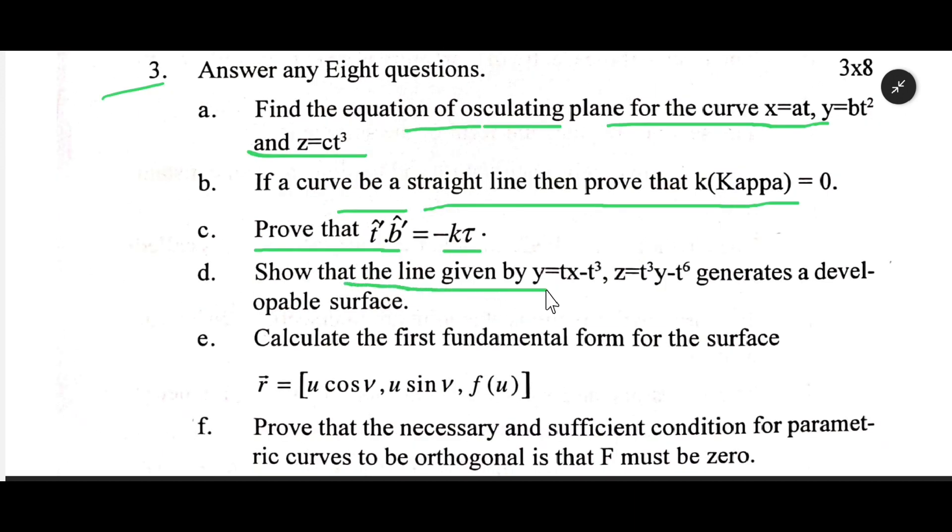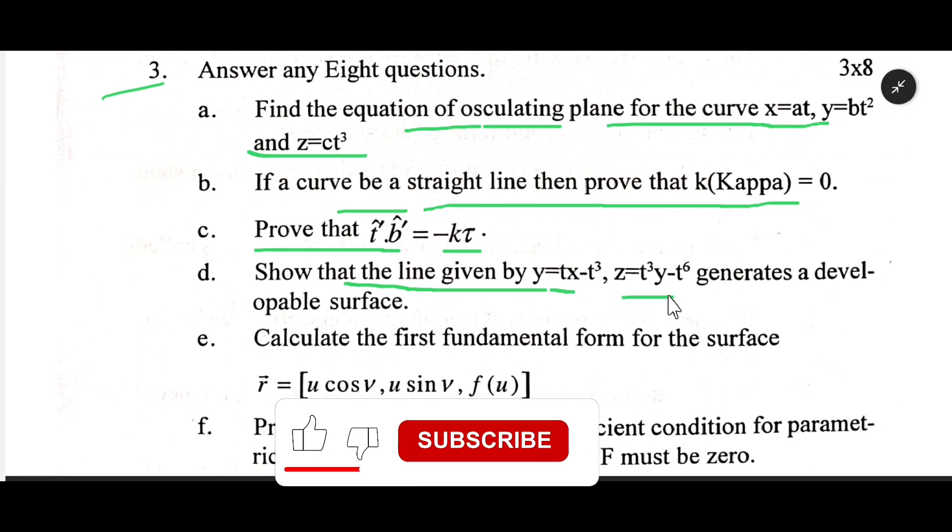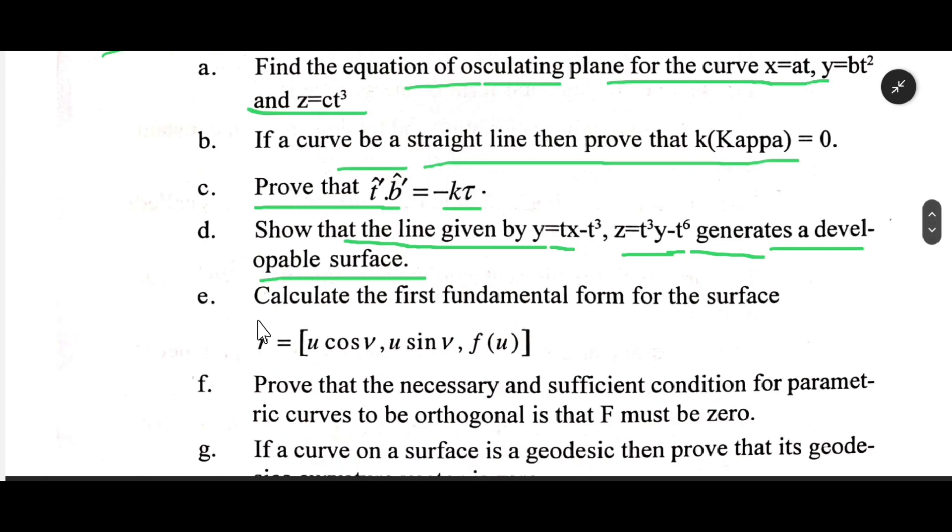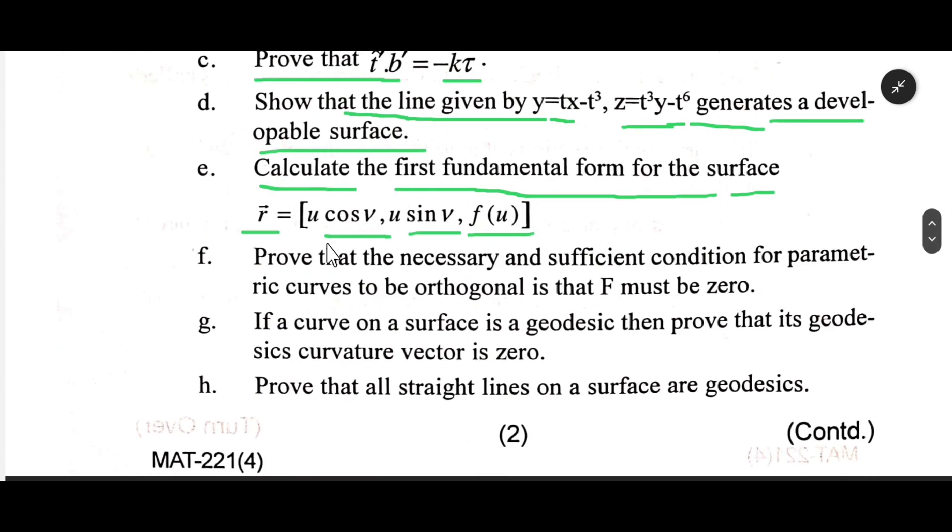Show that the line given by y = tx - t³, z = t²y - t⁴ generates a developable surface. Calculate the first fundamental form for the surface r⃗ = (u cos v, u sin v, f(u)). Prove that the necessary and sufficient condition for parametric curves to be orthogonal is that f must be zero.